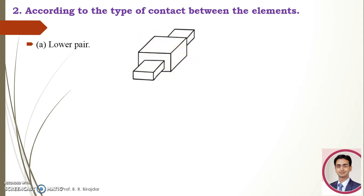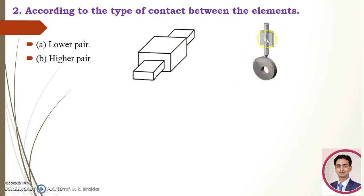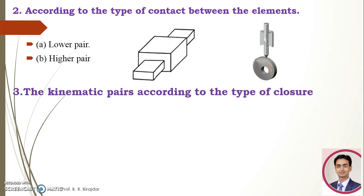Second is the higher pair. When the two elements of a pair have a line or point contact when relative motion takes place, and the motion between them is partly turning and partly sliding, the pair is known as the higher pair. The important thing in a higher pair is that the contact between the two elements is either a point or a line. An example is the cam and the follower, where the contact between the two elements is a point.